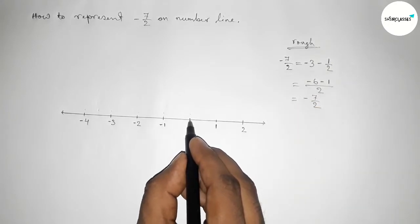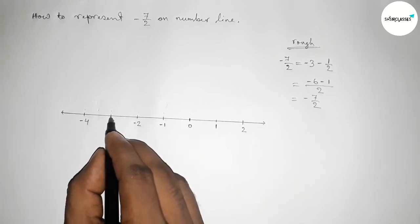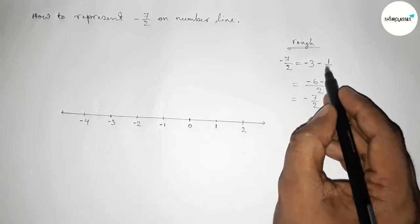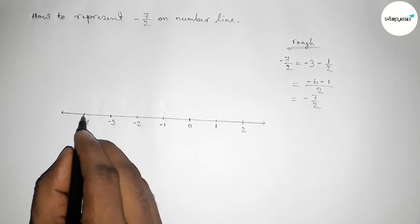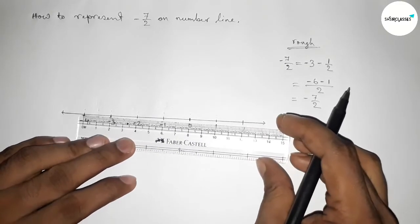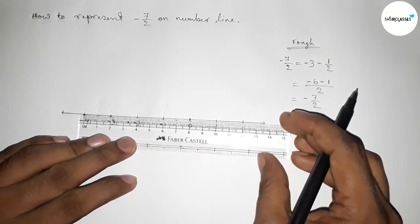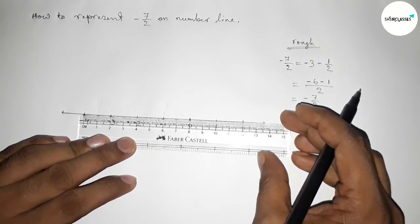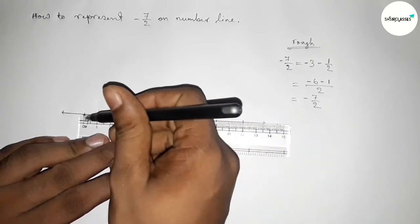So first counting minus 3, so from 0 to minus 3. And now finding the middle between minus 3 and minus 4 by using scale, by this way. So now I'm going to find out the middle between minus 3 and minus 4. And this is the middle, okay.